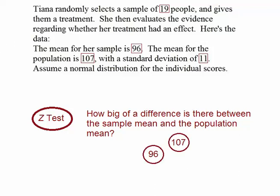Now consider Tiana's position. She's just provided a treatment to a group of 19 people. She's hoping that that treatment had an effect, had an impact. And she might be excited to know that her sample mean didn't match the population mean of 107. I think we'd all agree that if her sample mean was 107 and the population mean was 107, we would tell her, I'm sorry Tiana, it appears that there was no impact of your treatment. But instead, she got a 96. So there's some difference between the population mean and her sample.